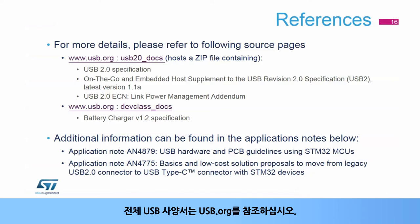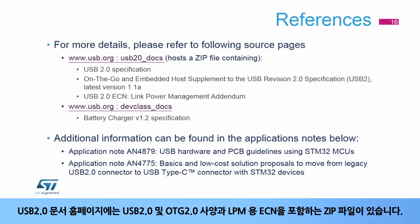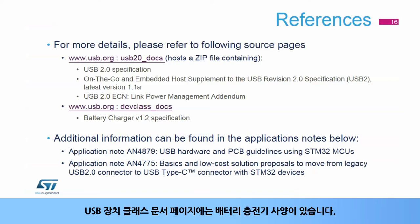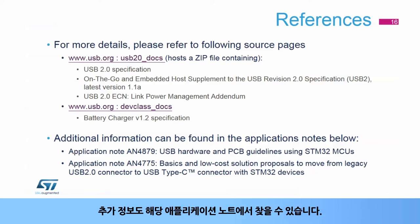For complete USB specification documents, please refer to USB.org. The USB 2.0 document home page has a zip file containing the USB 2.0 and OTG 2.0 specifications and an ECN for LPM. The USB device class documents page has the battery charger specification. Additional information can also be found in these application notes.